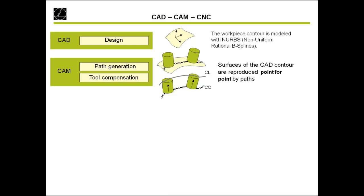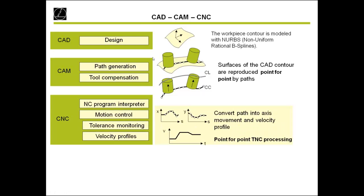The next step is the CAM system. The CAM system we need for the path generation and also for compensating the tool. There we decide if we want to use an end miller or a ball nose cutter, and also the way of milling the material — for example roughing, finishing, different jobs. And then we come to the CNC — the Heidenhain topic — because we have not only the control; we have motors, measurement systems, and everything, and with all these together we want to achieve the best surface on the milling machine.